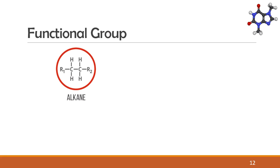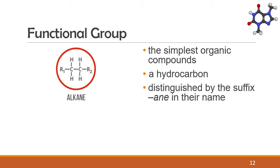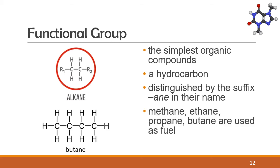Our first functional group is alkane. Alkane is the simplest organic compound. It is called a hydrocarbon because it is made up of only carbon and hydrogen atoms. Alkanes are distinguished by the suffix "-ane" in their name. Methane, ethane, propane, and butane are important alkanes because they are used as fuel.